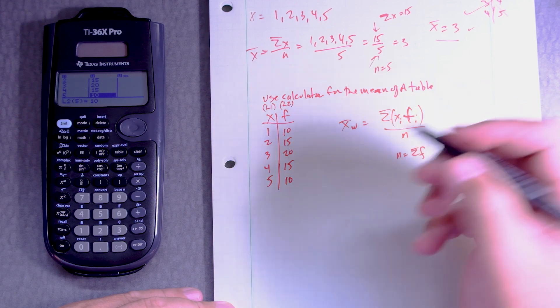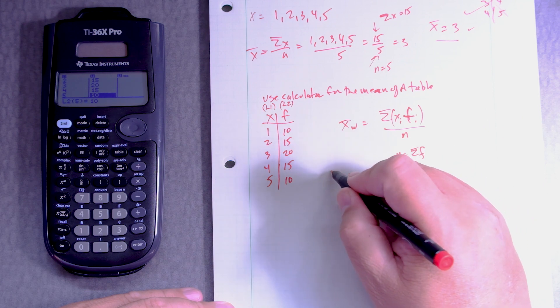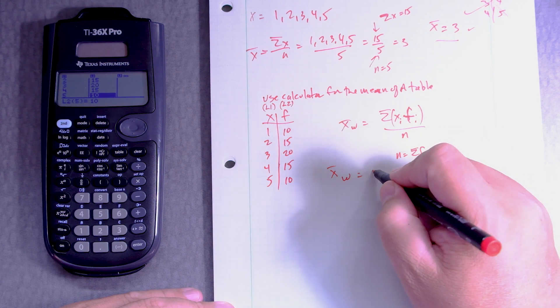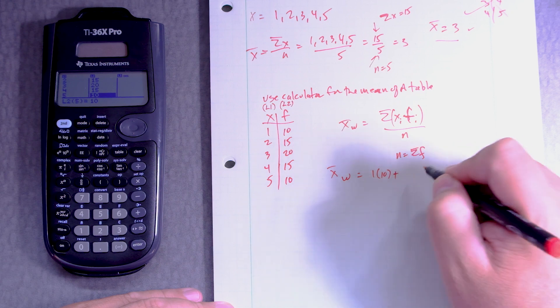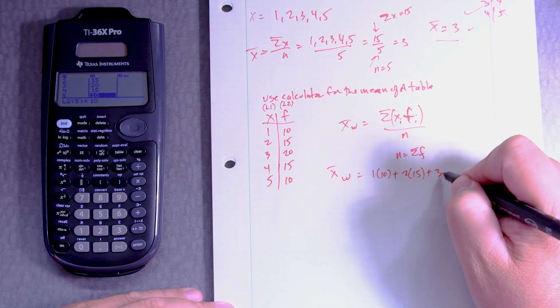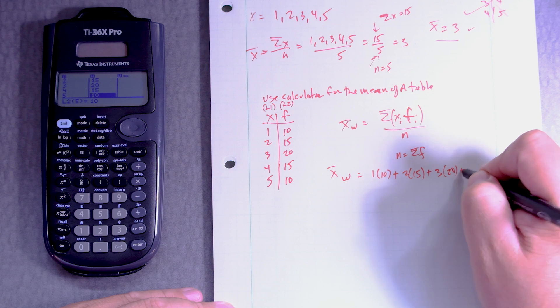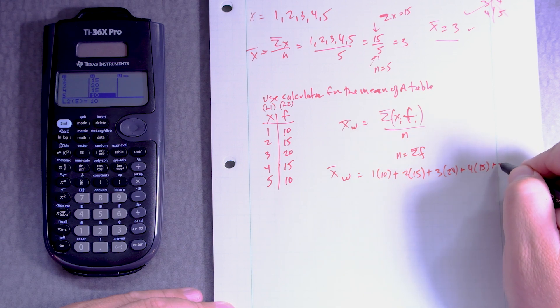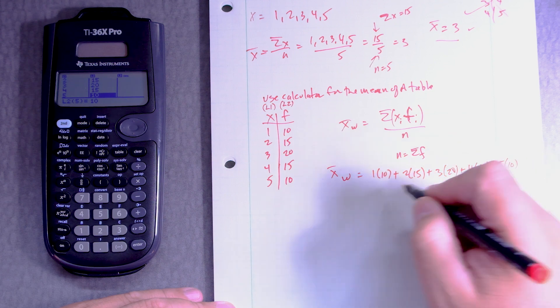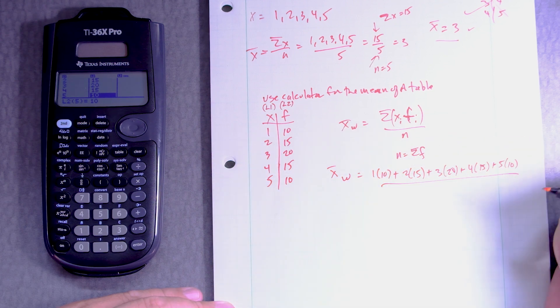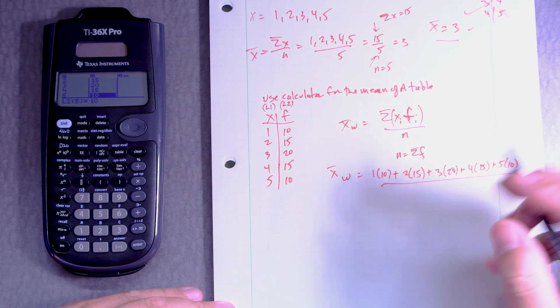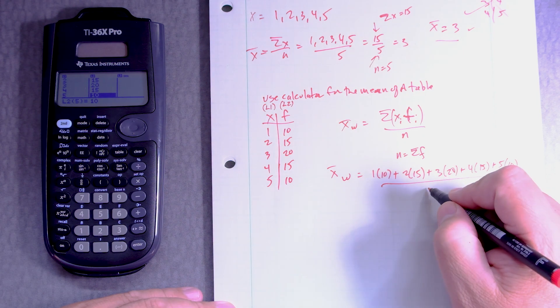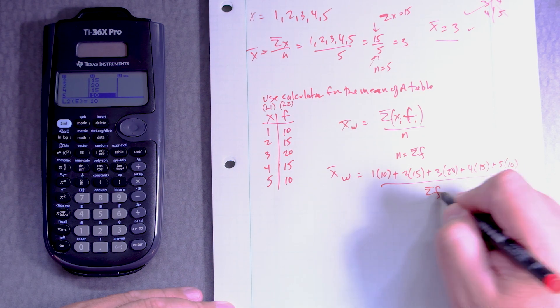So the way they sometimes will do this is they'll say 1 times 10 plus 2 times 15 plus 3 times 20 plus 4 times 15 plus 5 times 10 over the sum of n, and I'm not sure what that is, right? That would just be the sum of the frequency.